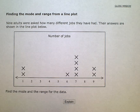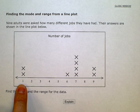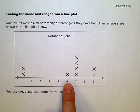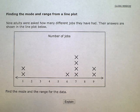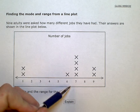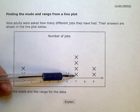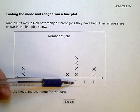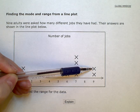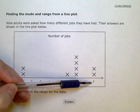Two of the adults have had one job. One adult has had six jobs. Number of jobs down here. So, four people answered that they have had seven jobs, and two adults answered they've had nine jobs.